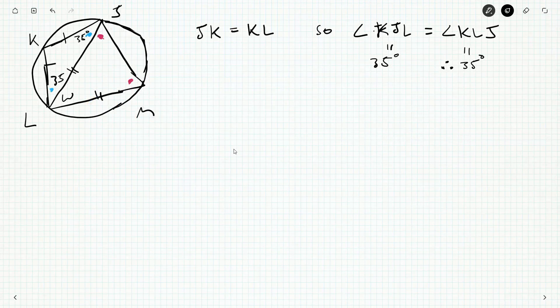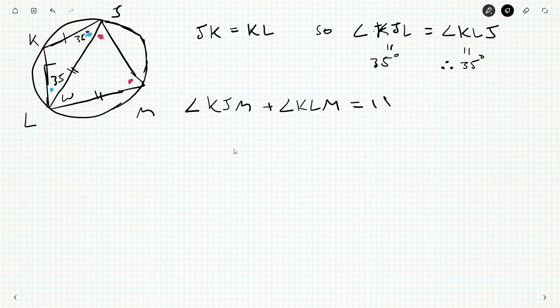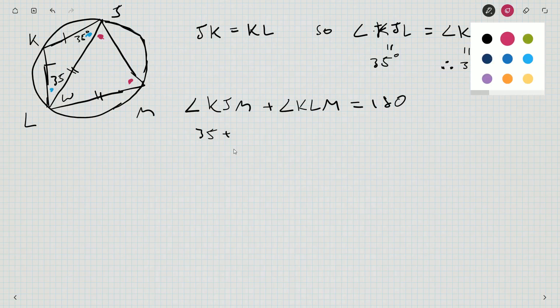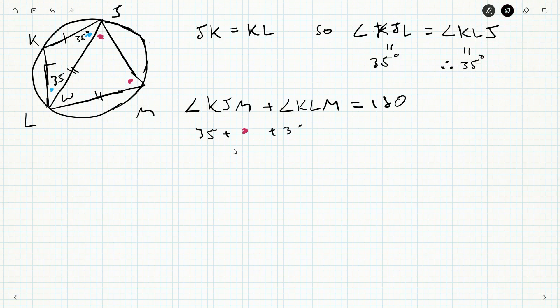This one's 35 degrees and we want w, which is down here. I know w is opposite 35, so I know that angle KJM plus angle KLM equals 180. That's 35 plus a red dot plus 35 plus w equals 180. So that means dot plus w equals 180 minus 70, so 110.